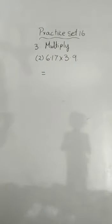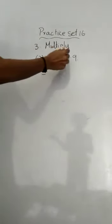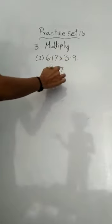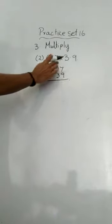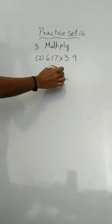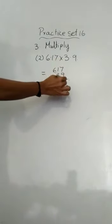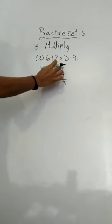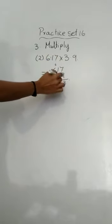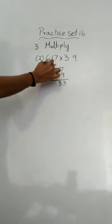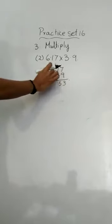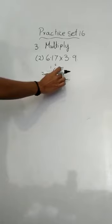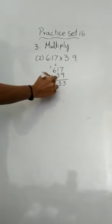The next question is 6.17 and 3.9. Forget the decimals and do the multiplication. 7 nines are 63, carry 6; 1 nine is 9, plus 6 gives 15, carry 1; 6 nines are 54, plus 1 gives 55.